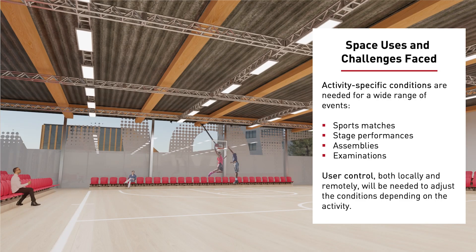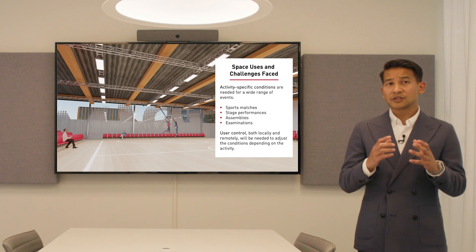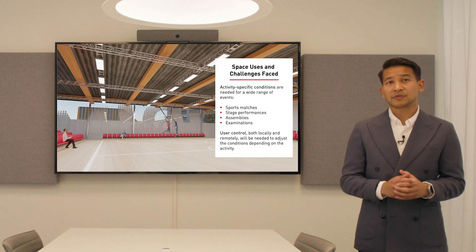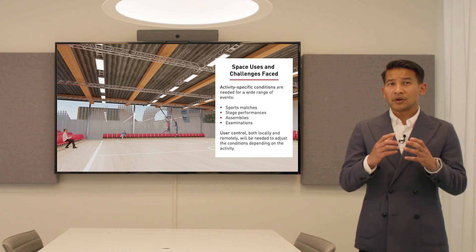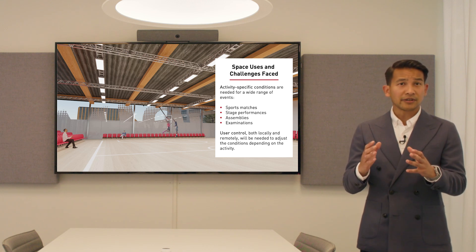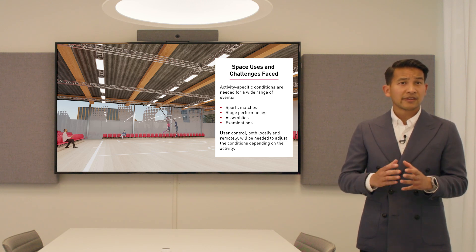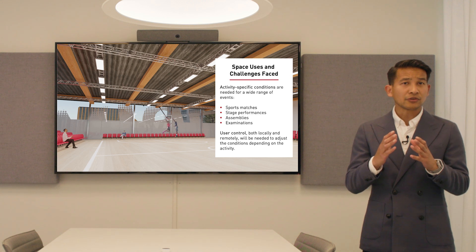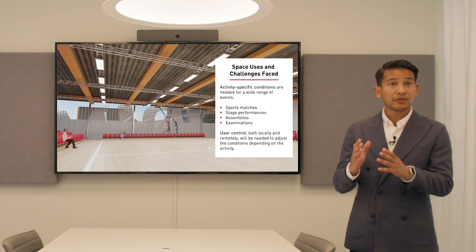Welcome to one of the oldest parts of the campus: the sports hall. We know there are different types of people who use this space — not only sports teams, but also a variety of other users. Often sports halls are used as examination spaces, for example, so there are multiple different users for this area. Therefore, it's important the space can be controlled both locally and remotely, as it's a truly multi-purpose space.